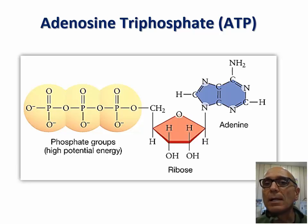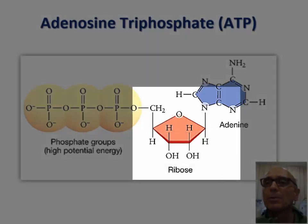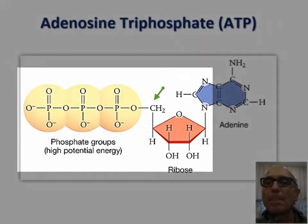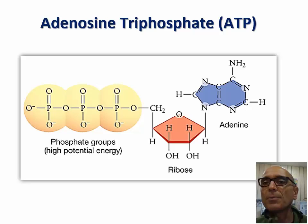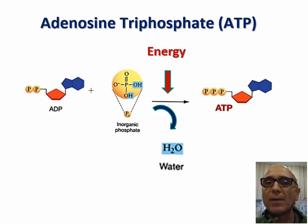ATP, or adenosine triphosphate, consists of the nitrogenous base adenine that is linked to the five-carbon sugar ribose through carbon number one in ribose. Carbon number five of ribose is covalently bonded to three phosphate groups. In cells, ATP is formed through the process of dehydration or condensation, linking through a covalent bond one inorganic phosphate group to the outer phosphate group in adenosine diphosphate, or ADP.